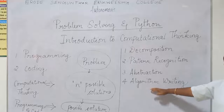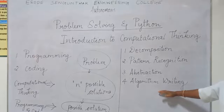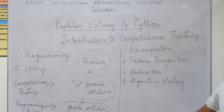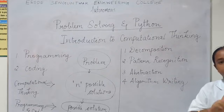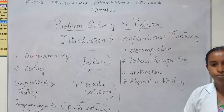The fourth stage is algorithm writing. Algorithm writing gives the step-by-step procedure: I need to plan, I need to schedule, I need to take everything, and I need to fly to Mars. Thank you.